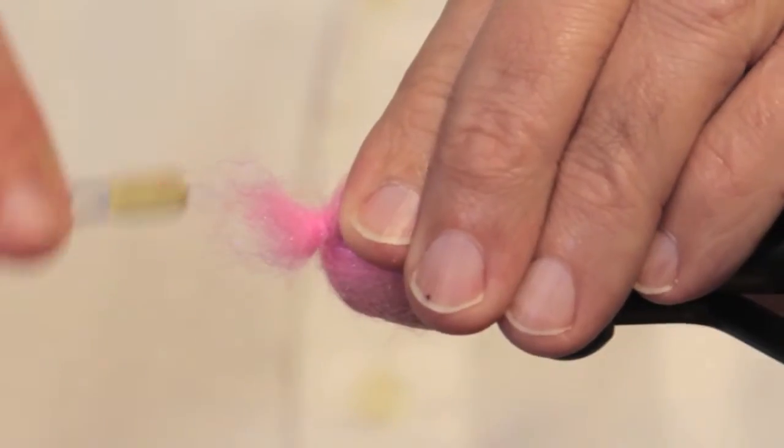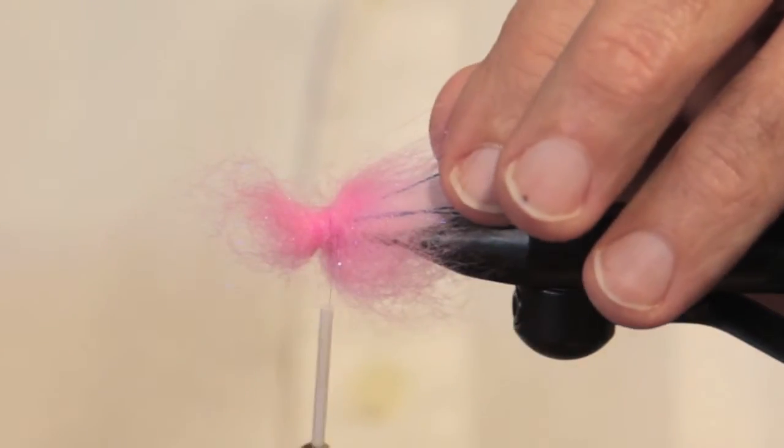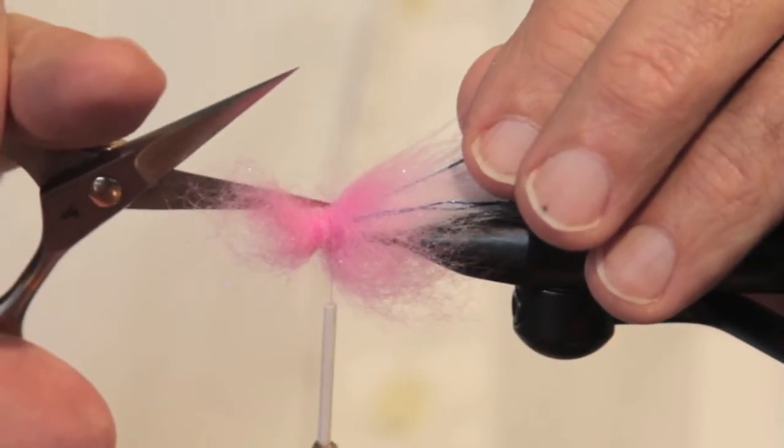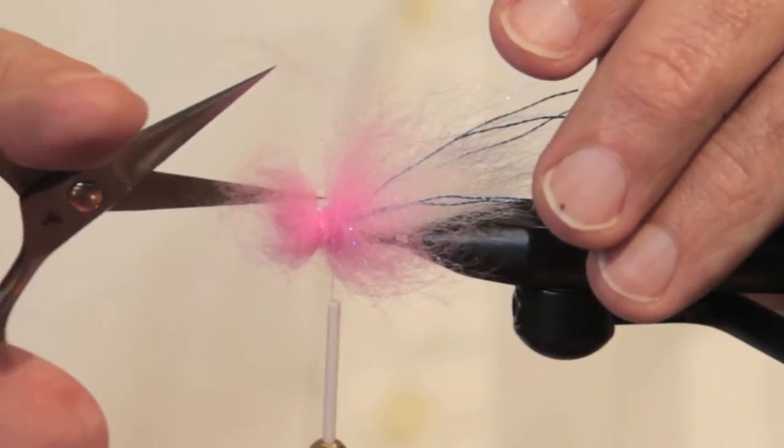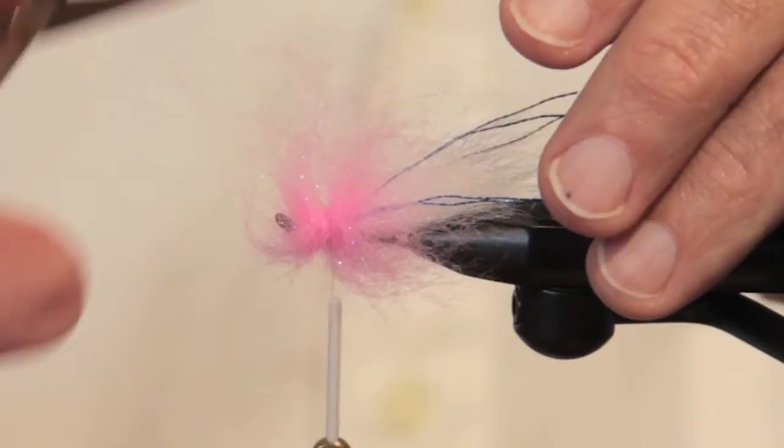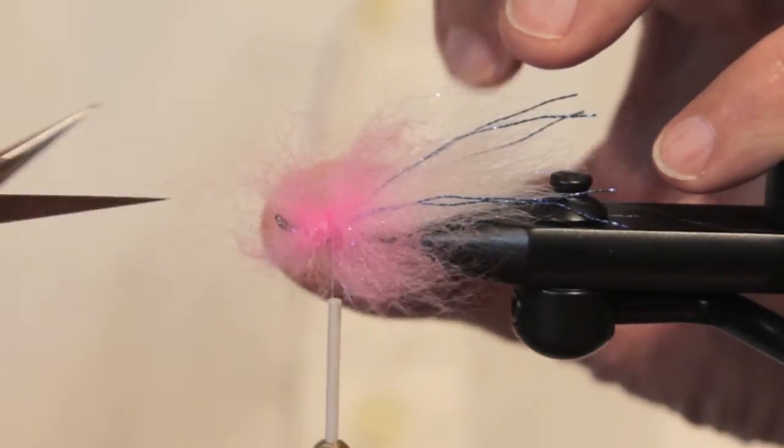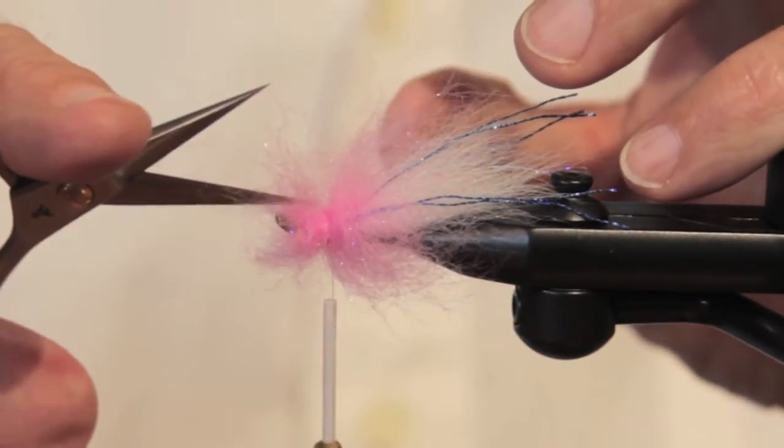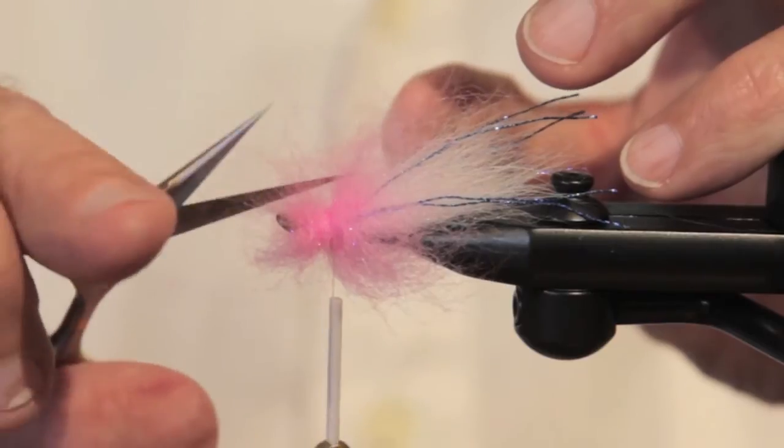And then you wrap right through the center. You're going to have some fibers that are caught and trapped. You'll be able to see those. You pick those out, slice through them. It's all good.